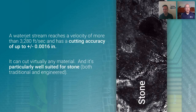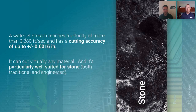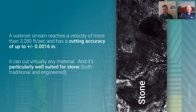The keyword is power. A water jet stream can reach a velocity of more than 3,200 feet per second, and we can cut to accuracies of one to two thousandths of an inch. At 3,200 feet per second, we're approaching about Mach 3 — about three times the speed of sound. When we put abrasive into that stream, it gives us the ability to cut anything, and it's particularly well-suited for cutting stone, both man-made and natural stone materials.